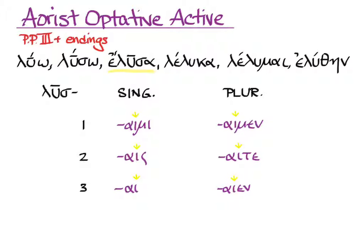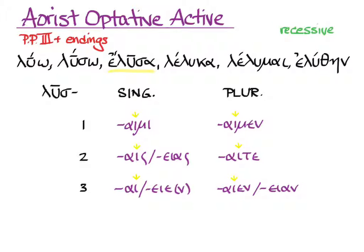Attic Greek also has alternative forms for some of these persons and numbers. We have an alternative form for the second person singular: -aios; the third singular: -aien or -aia, which can also be -aien because it can have a nu movable; and the third plural: -aion. Even in these alternative forms you see the characteristic iotas of the optative. You'll need to be able to recognize the alternate endings, which appear as often as the primary endings, but you can use whichever is your favorite for English-to-Greek purposes. The accent is recessive. There's no default translation because there's no context, but the aspect is simple aspect, as is usually the case for the aorist.